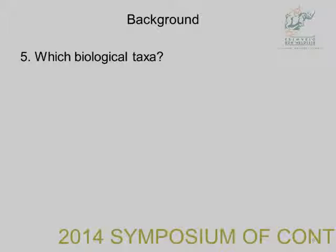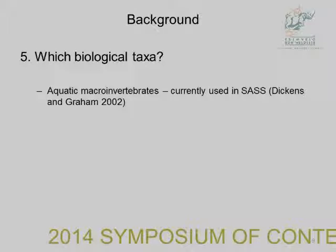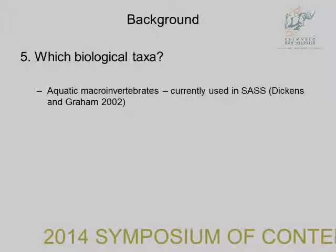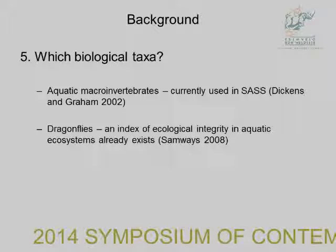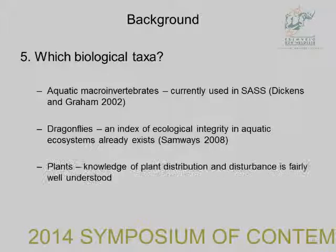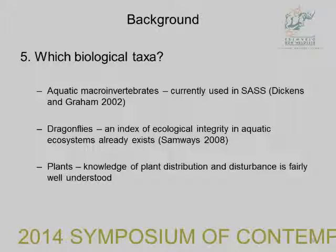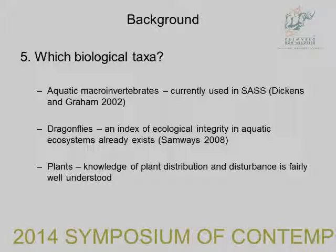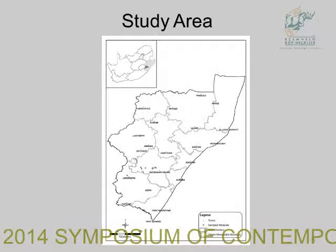The question was which biological taxa to use. I chose aquatic macroinvertebrates because they are well-studied and we have the South African Scoring System which works well. I also chose dragonflies because Samways has done a wonderful job on them and we have a Dragonfly Biotic Index available. I also used plants — their distribution is well understood — but this is the last time I'll mention them. I sampled them but couldn't complete identification due to some problems, so I left them out. I also sampled water quality.